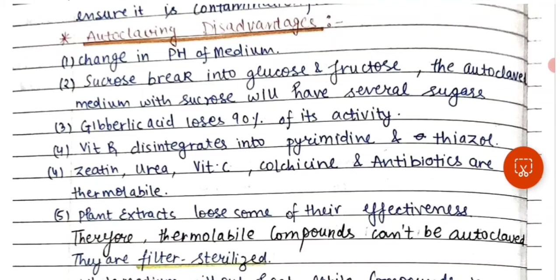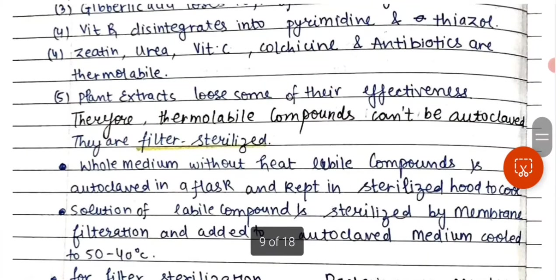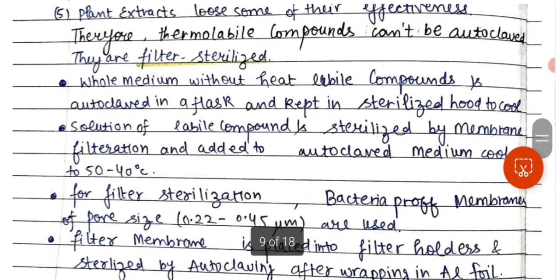Vitamin B1 disintegrates into pyrimidine and thiazole. Zeatin, urea, vitamin C, colchicine, and antibiotics are thermolabile. Plant extracts lose some of their effectiveness. Therefore, thermolabile compounds cannot be autoclaved, so they are filter sterilized. The whole medium without the heat-labile compound is autoclaved in a flask and kept in a sterilized hood to cool.